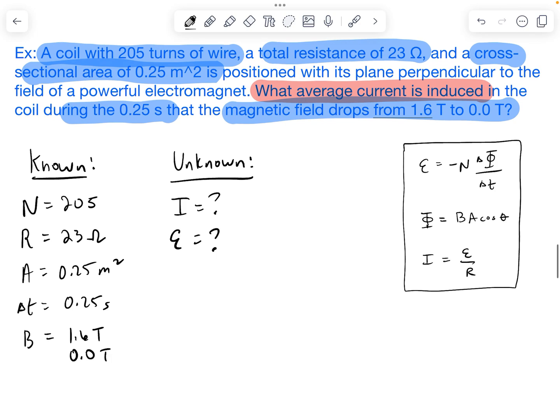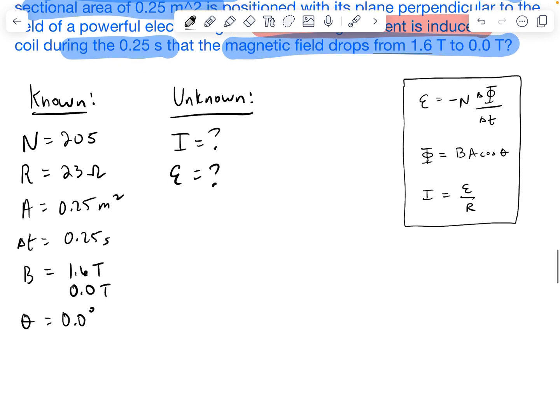All right, so before I start getting into just kind of plugging in some values, what I want to do is I actually want to combine these two equations. Since flux is in the Faraday's law equation, I know what flux is. Flux is the magnetic field strength times the area times the cosine of the angle. In this case, we don't have an angle. Theta, we could add that here. We were not given an angle, so theta is 0.